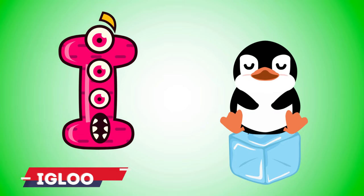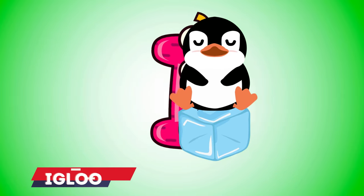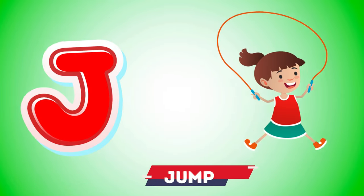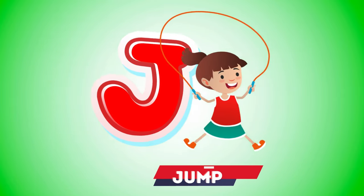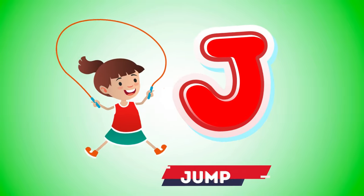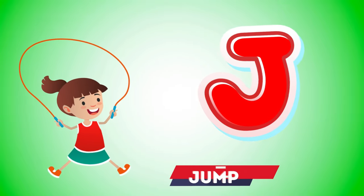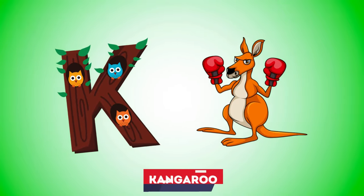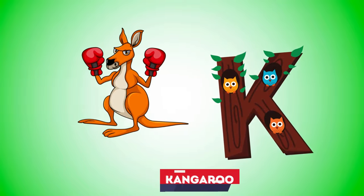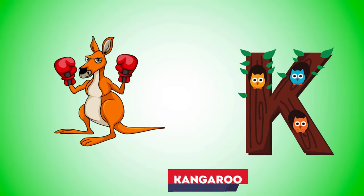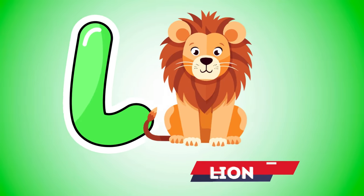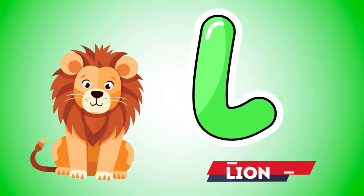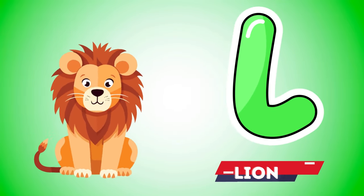I is for igloo, i-i-igloo. J is for jump, j-j-jump. K is for kangaroo, k-k-kangaroo. L is for lion, l-l-lion.